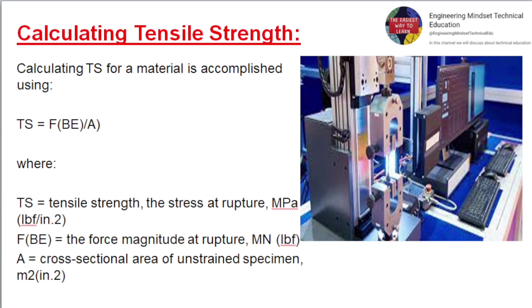Calculating tensile strength: TS is calculated using the formula TS = FB / A, where TS equals tensile strength (stress at rupture, in MPa or lbf/in²), FB equals the force magnitude at rupture (in MN or lbf), and A equals the cross-sectional area of the unstrained specimen (in m² or in²).